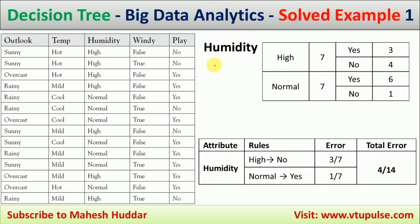For humidity, there are two possibilities: high and normal, each appearing seven times. High has three yes and four no — so high = no gives four correct and three incorrect, three errors out of seven. Normal has six yes and one no — normal = yes gives six correct and one incorrect, one error out of seven. Total error for humidity is four out of 14.